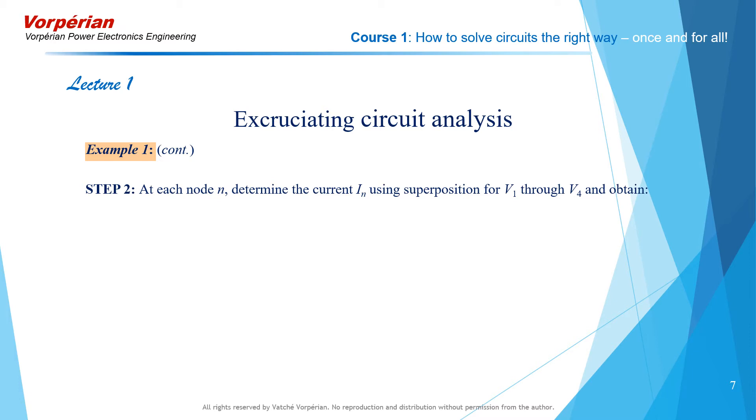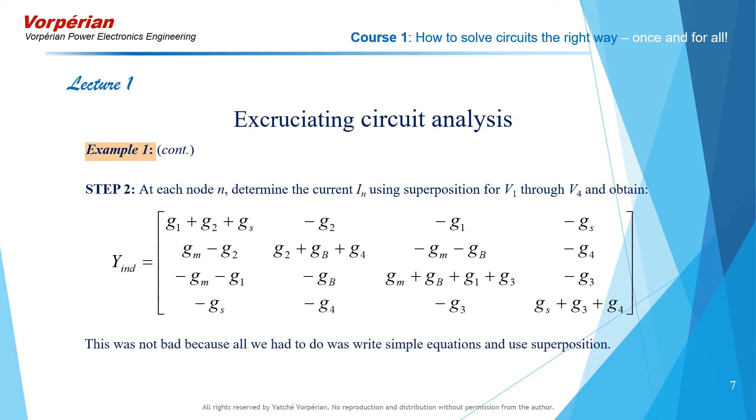At each node n, determine the current In using superposition for V1 through V4 and obtain the indefinite admittance matrix. Now, this isn't bad at all because all you had to do was write simple equations and use superposition. So far, so good.